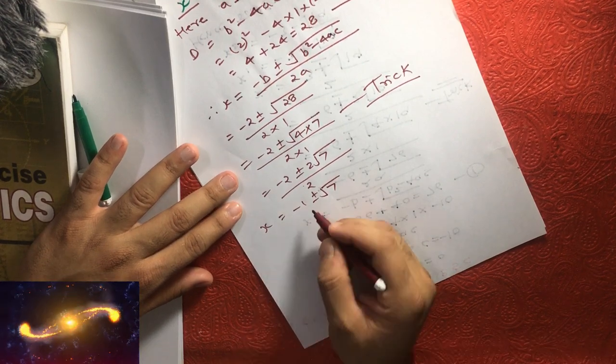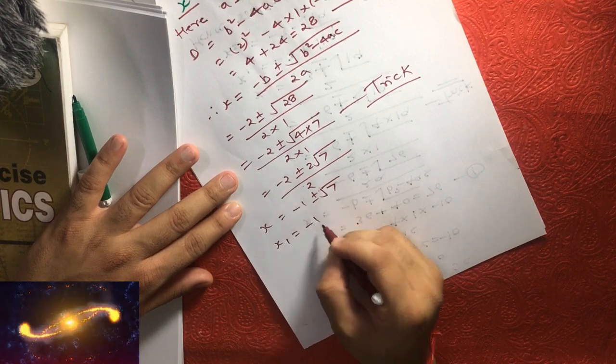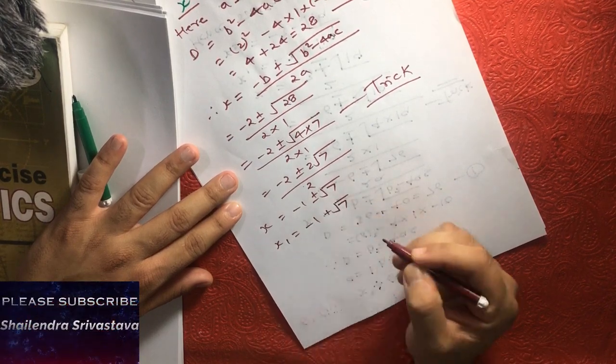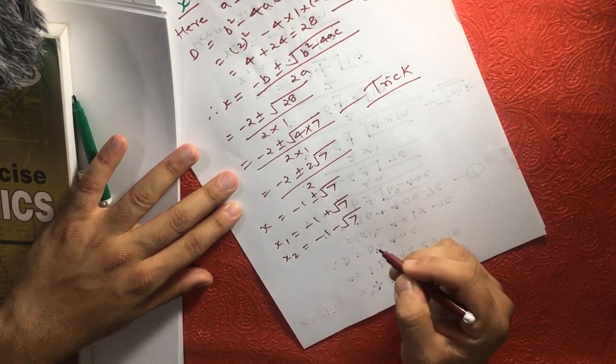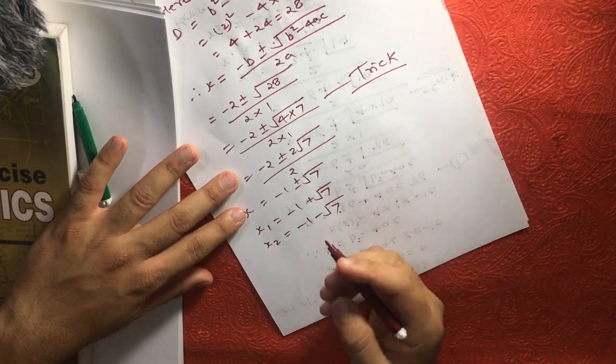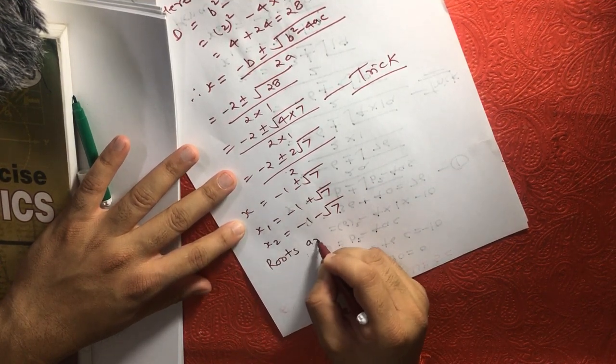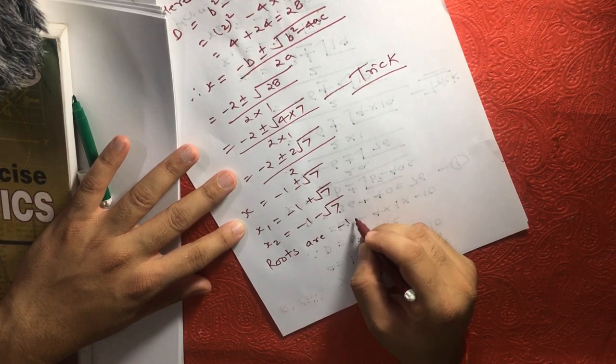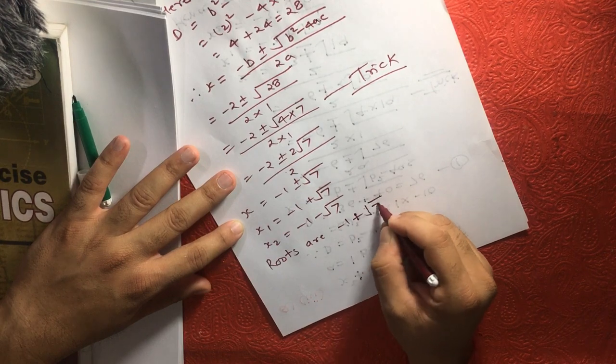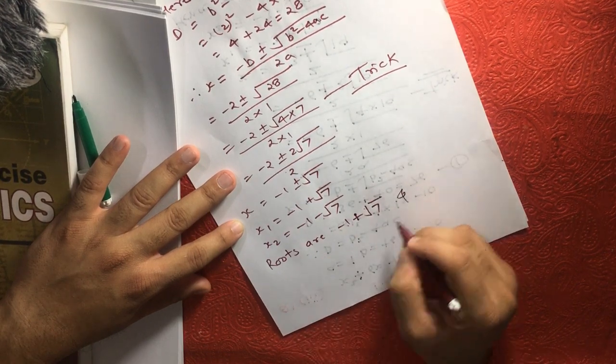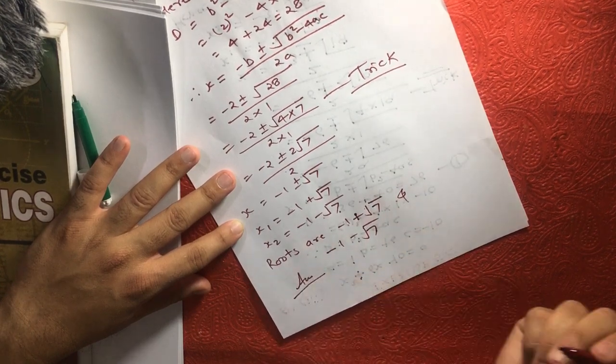Now, if we consider this as positive, then x1 equals minus 1 plus square root of 7. And for x2, minus 1 minus square root of 7. So these are the two answers. We can say the roots are minus 1 plus square root of 7 and minus 1 minus square root of 7. That is your answer.